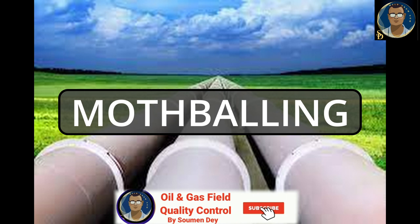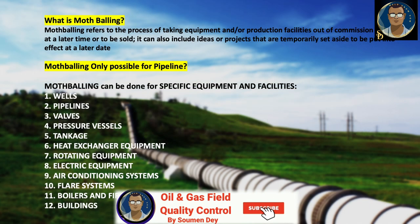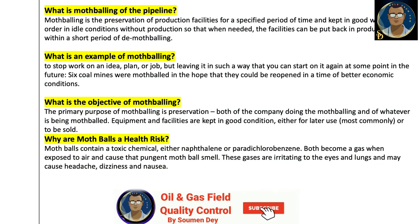To activate a temporarily or long-time deactivated line, we need to make it ready through a process called mothballing — that is our subject today. Mothballing refers to the process of taking equipment and/or production facilities out of commission to be used at a later time or to be sold. It can also include projects that are temporarily set aside to be put into effect at a later date. Mothballing is not only possible for pipelines — it can be done for specific equipment and facilities like oil pipelines, valves, pressure vessels, tankage, heat exchangers, rotating equipment, electric equipment, air conditioning systems, flare systems, boilers, fired heaters, and even buildings.